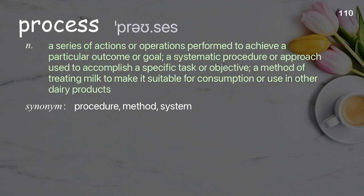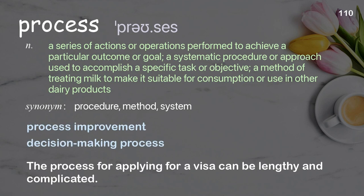Process. A series of actions or operations performed to achieve a particular outcome or goal; a systematic procedure or approach used to accomplish a specific task or objective. Examples: decision-making process. The process for applying for a visa can be lengthy and complicated.